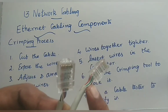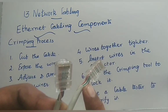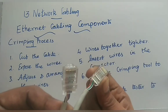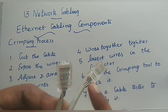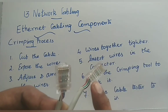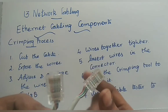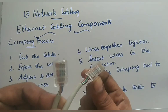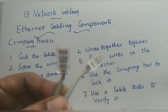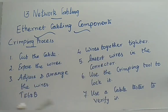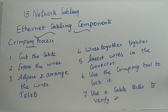Inside you have a patch cable — that is your twisted pair cable — and the connector. This cable is inserted into the connector by means of the crimping tool.